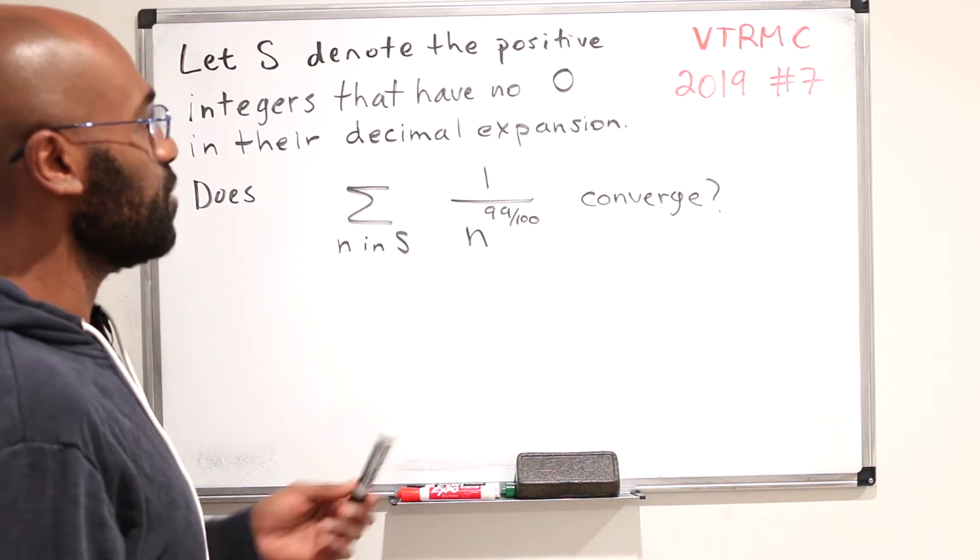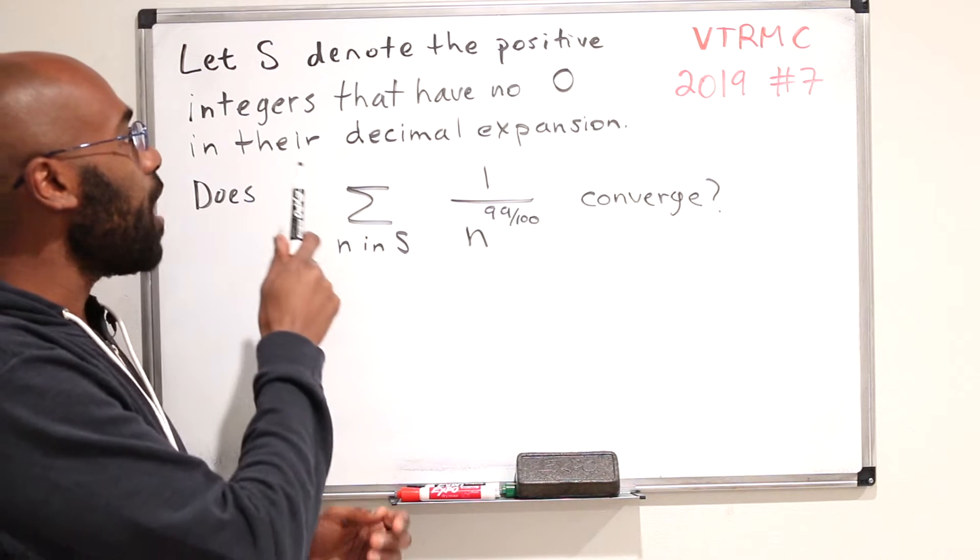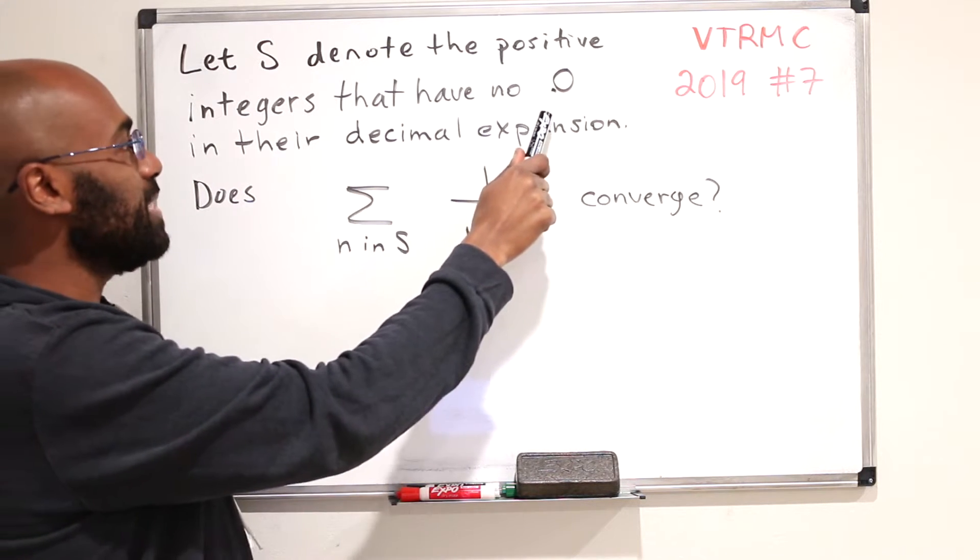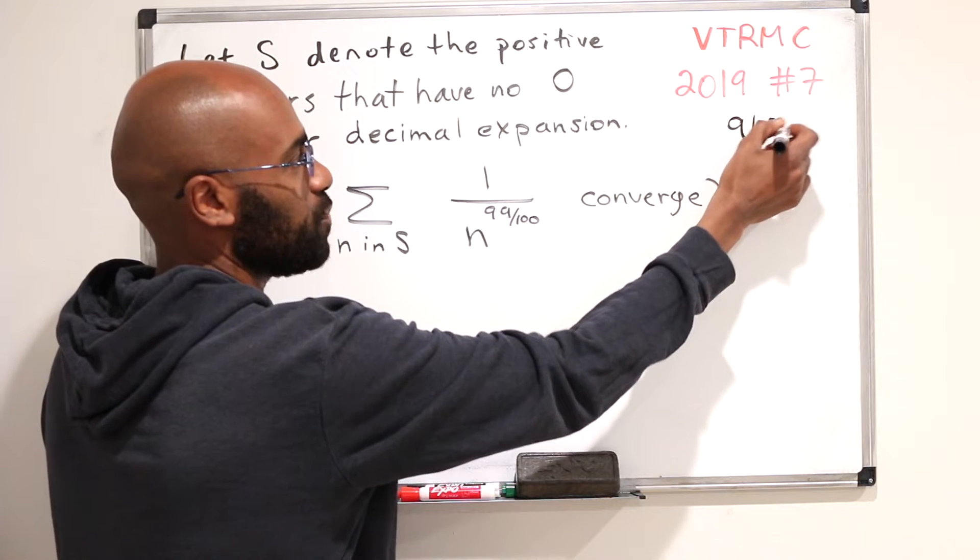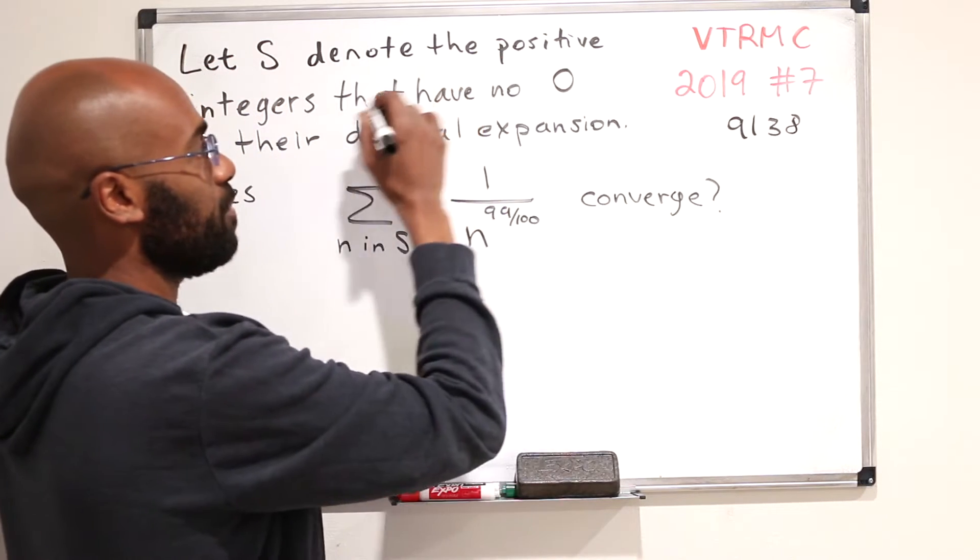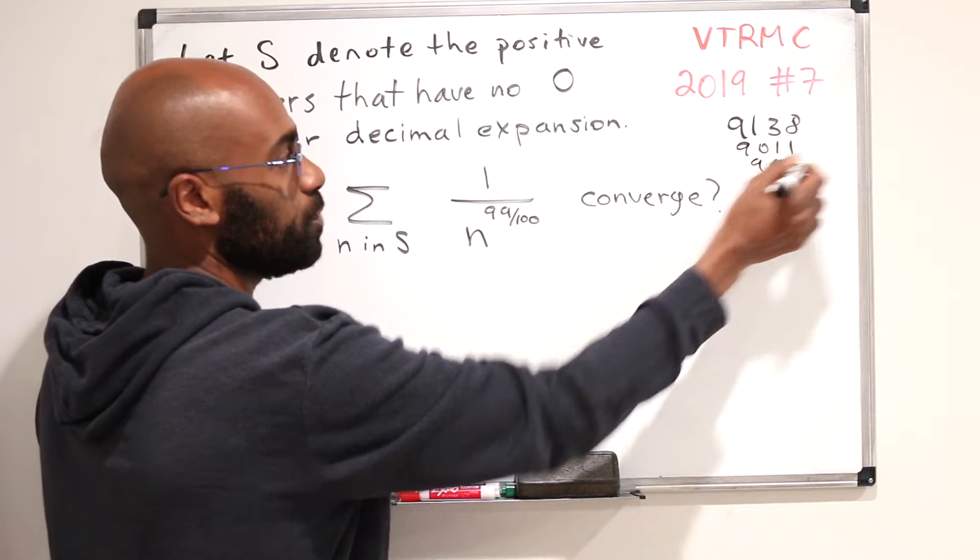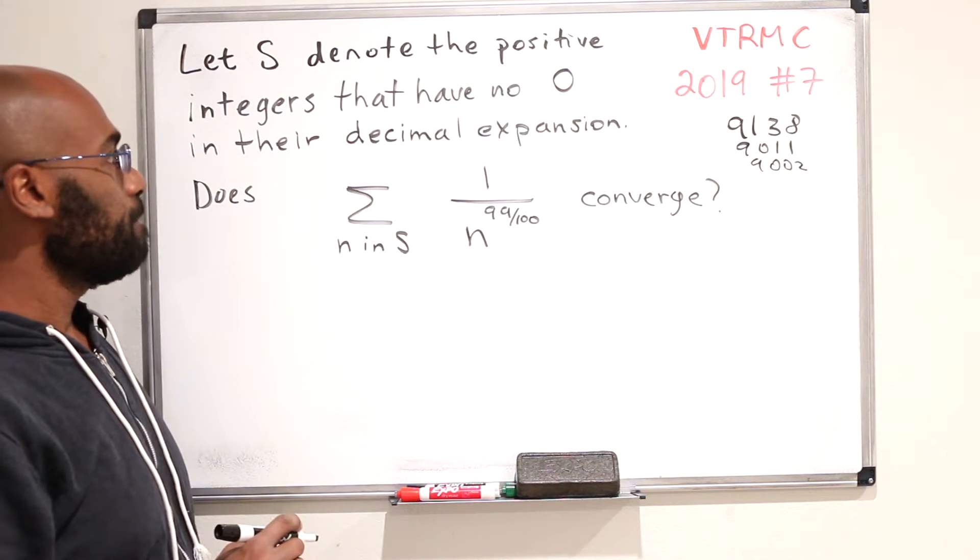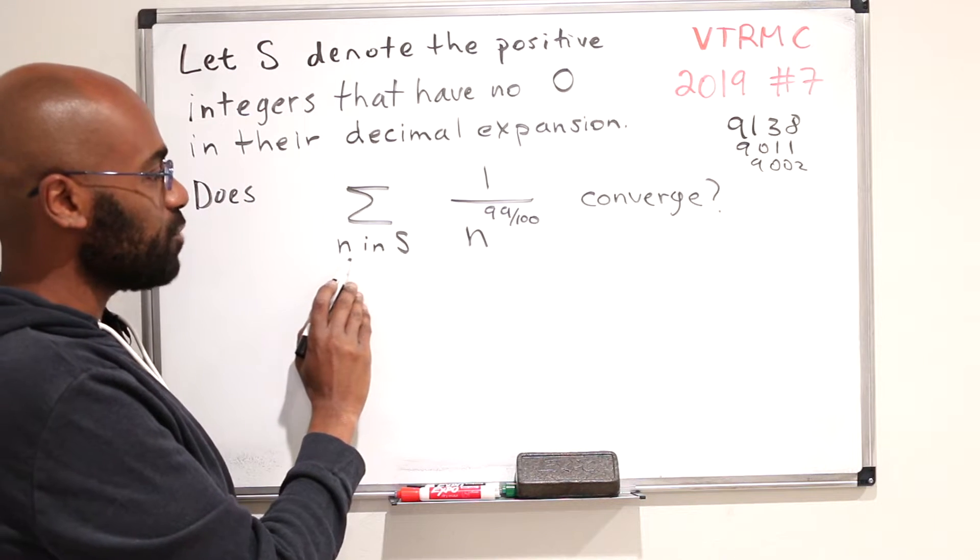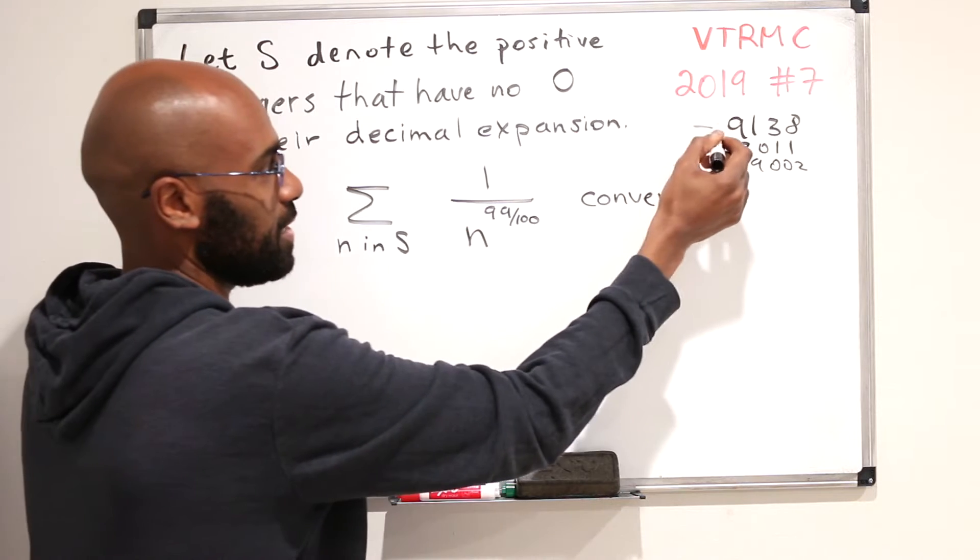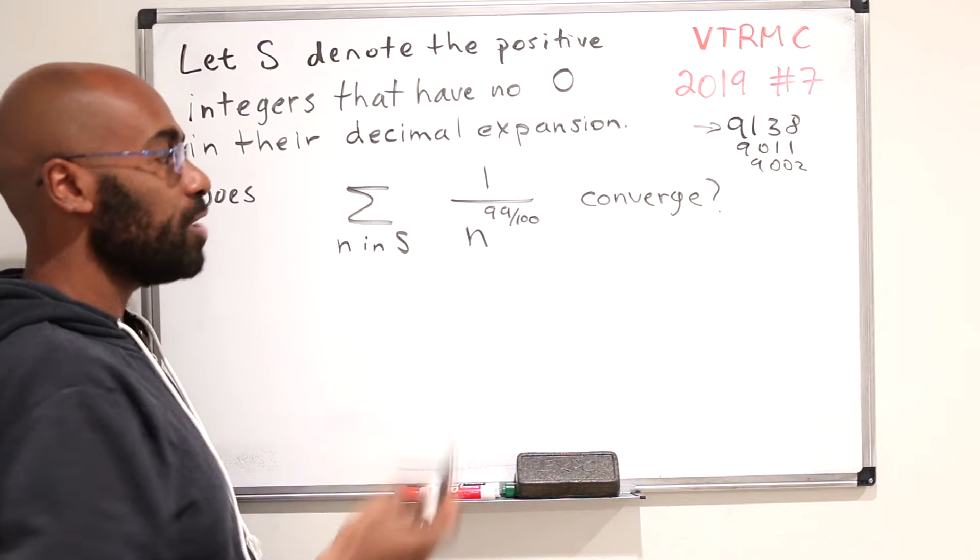Today we're going to discuss this interesting problem. Let S denote the set of positive integers that have no zero in their decimal expansion. So an example is 3918. An example that's not on this list is 9011 or 9002. The question is, does the series where we sum over all natural numbers in S of the ratio 1 over n to the 99 over 100 converge?